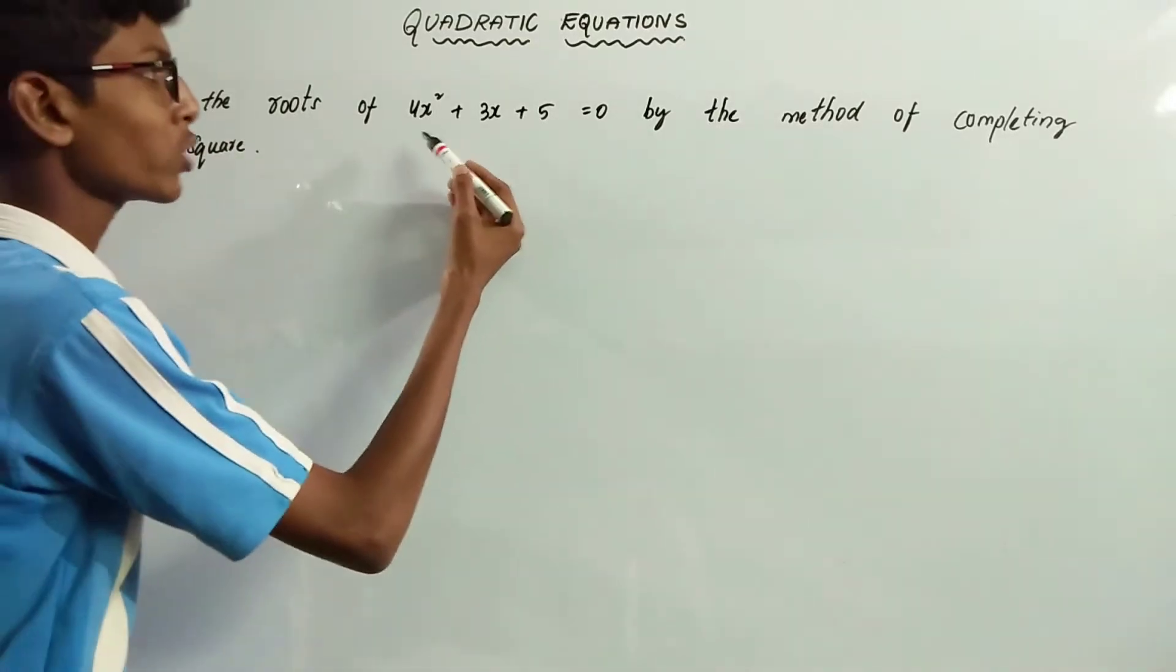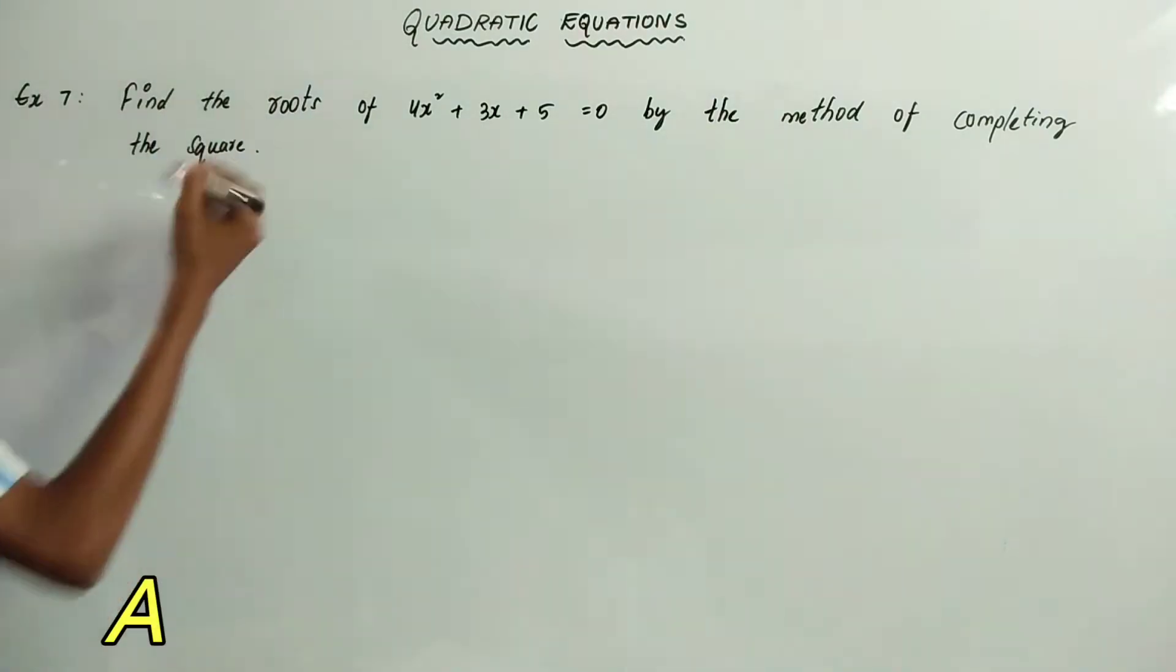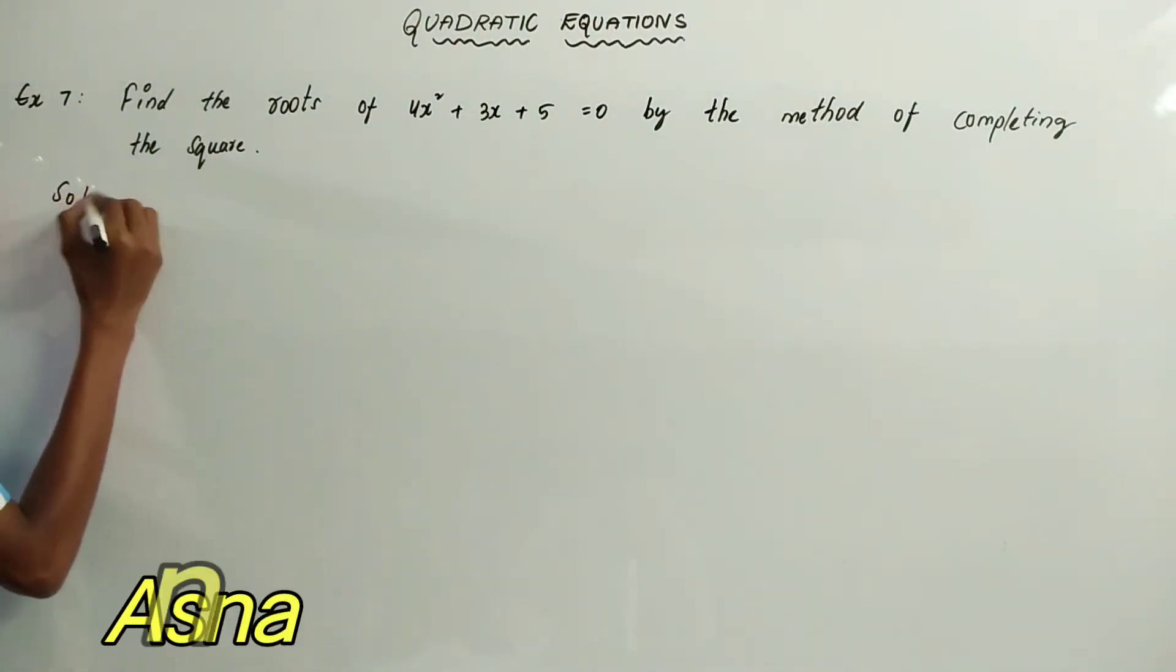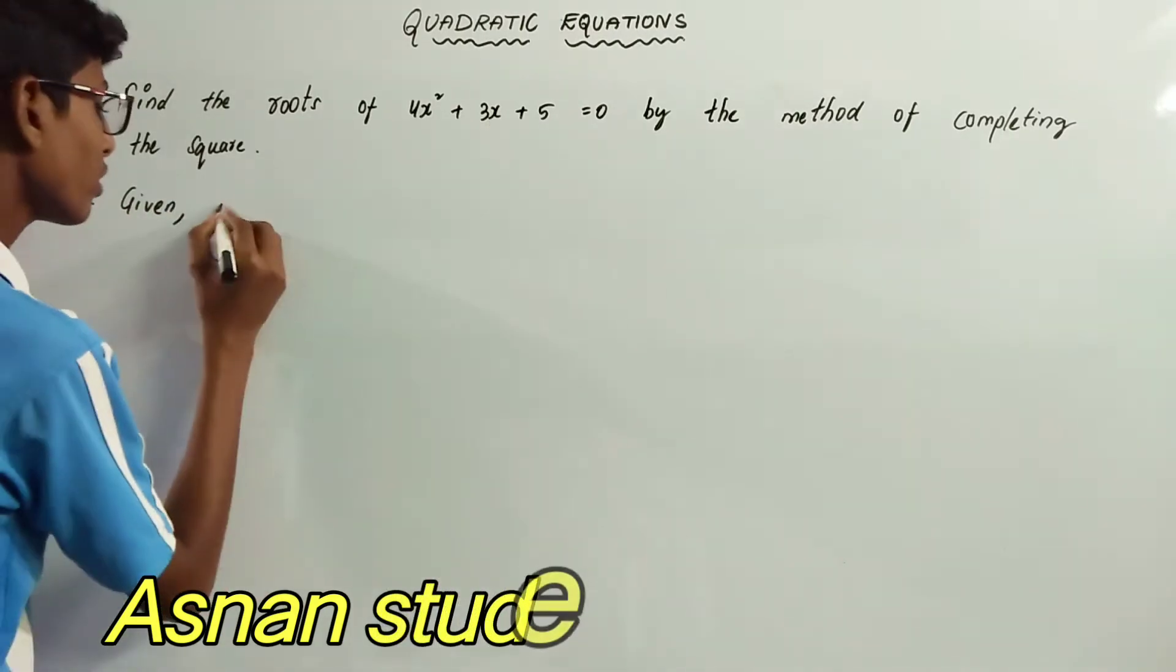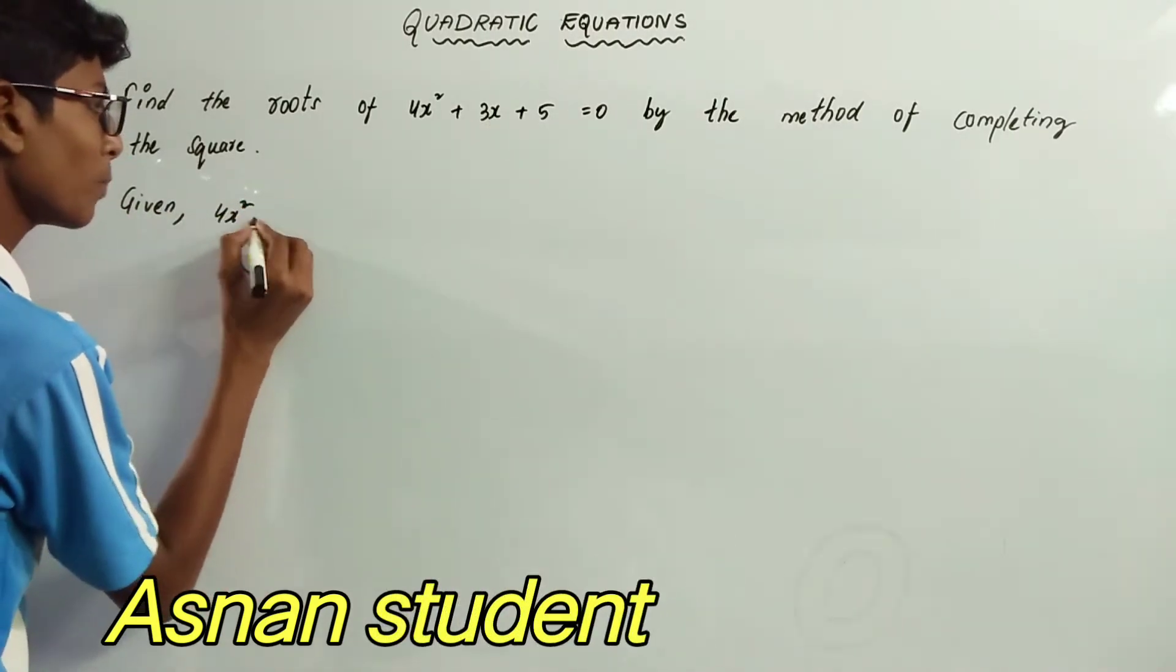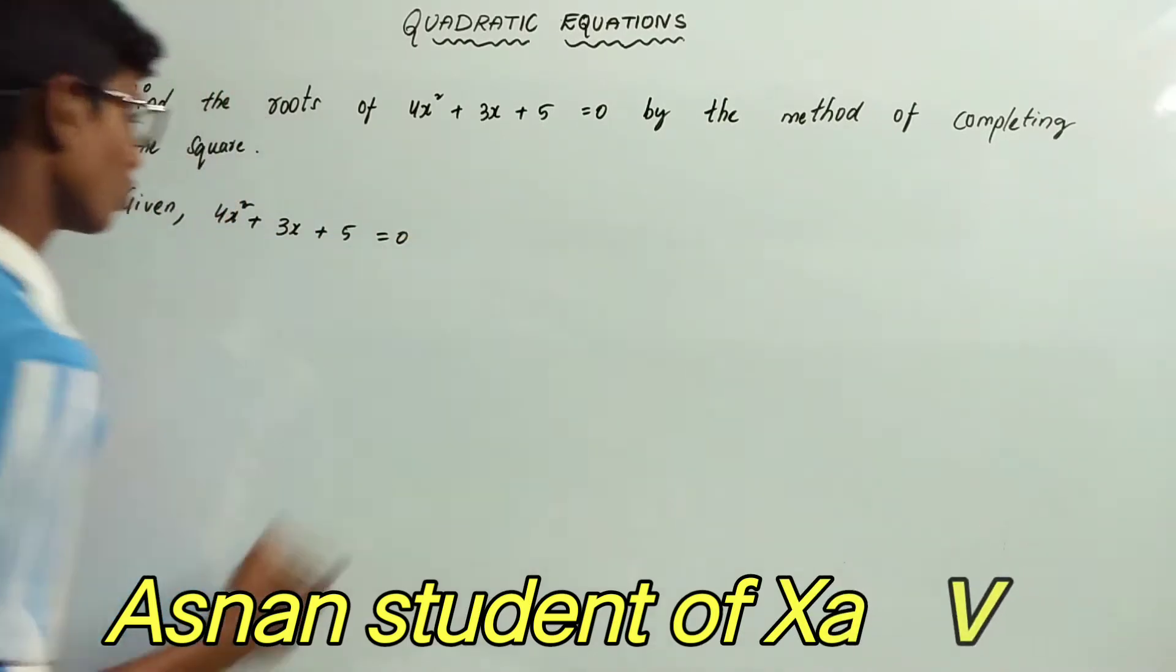Find the roots of 4x² + 3x + 5 = 0 by the method of completing the square. Given, 4x² + 3x + 5 = 0.